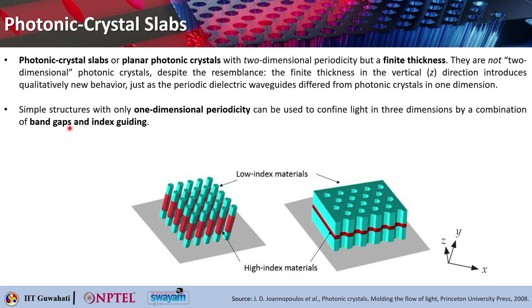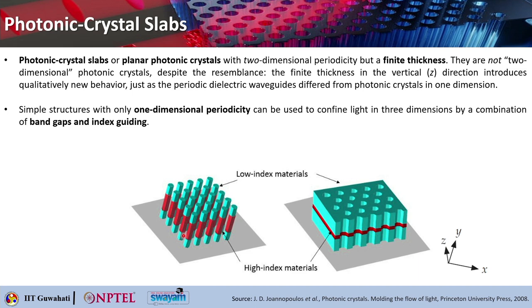That concept comes from a combination of band gap and index guiding. Laterally, you can restrict the light flow using Photonic Band Gaps, and in the vertical dimension where you have finite thickness, you have to rely on index guiding. This is an example of a two-dimensional Photonic Crystal Slab. We are not calling them two-dimensional Photonic Crystals because they have finite thickness. The red region shows high index material and the light color region shows low index material. The high index material is surrounded by low index material, and that is how index guiding takes place — very similar to the total internal reflection effect.